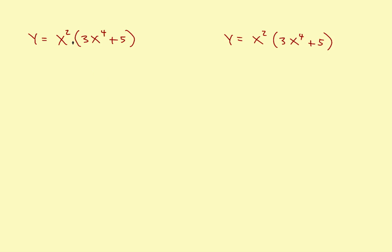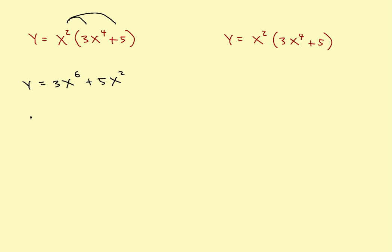Let's take a look at another example. I want to show a couple of ways of doing things. One way is to distribute first and then use the power rule. So distributing: this times this and this times this, adding the exponents, gives y equal to 3x to the 6th plus 5x squared. Taking the derivative using the power rule gives 18x to the 5th plus 10x.